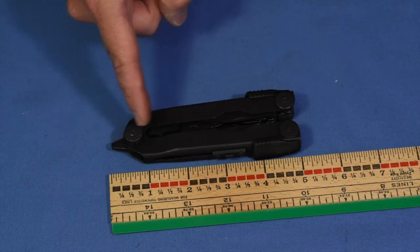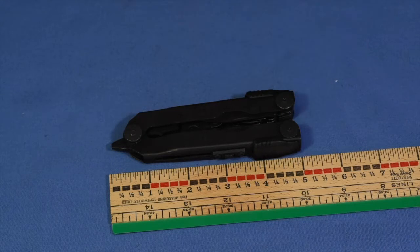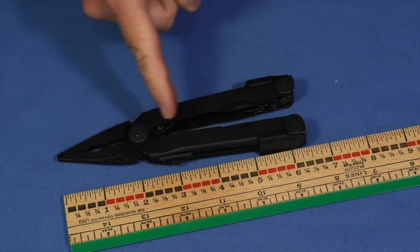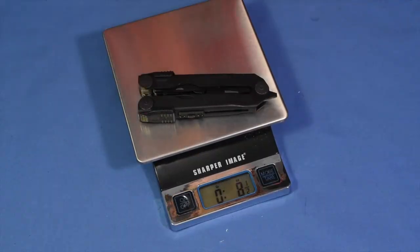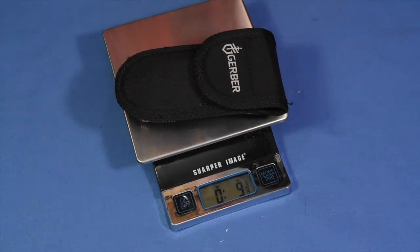Length when closed, 4.92 inches. Length with the pliers deployed, 6.61 inches. Weight, eight and a half ounces. With the nylon sheath, nine and a quarter ounces.